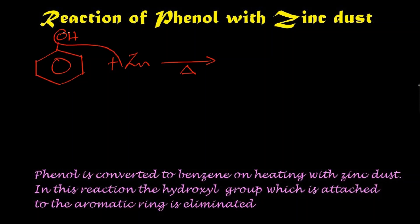This oxygen and this zinc together, zinc oxide is eliminated from this mixture. What we get? We get benzene. This hydrogen will be attached to this carbon.